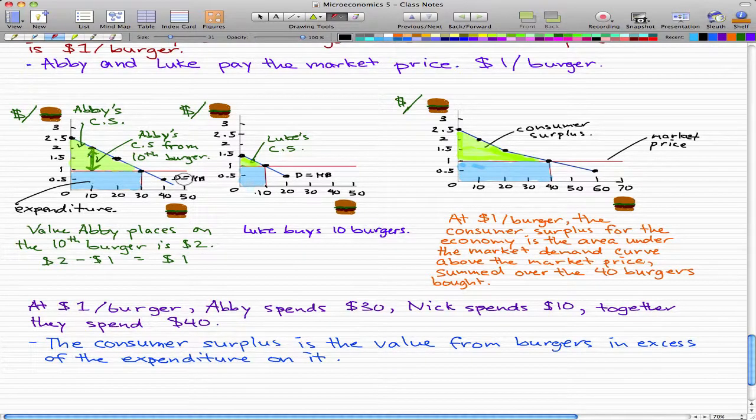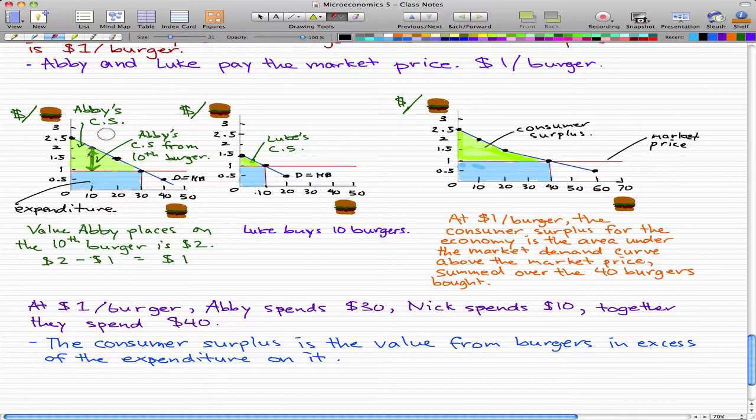So let's look at it this way. This blue individual demand curve is the total that Abby is willing to pay. So at 10 burgers, for the 10th burger, Abby is willing to pay $2.